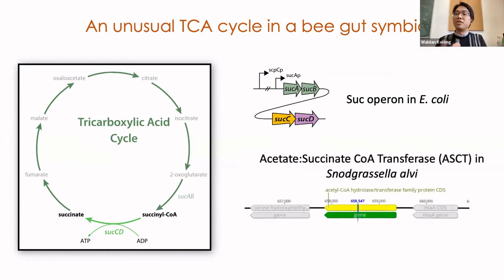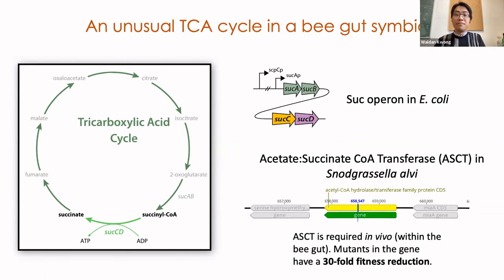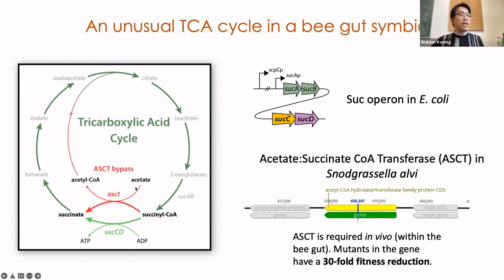Around this time, we were also conducting transposon insertion sequencing of Snodgrassella to determine the genes involved in gut colonization. We ended up identifying a candidate gene — a putative acetate succinate-CoA transferase, or ASCT — that was necessary for living in the bee gut. In fact, mutants in this gene had a 30-fold reduction in fitness in vivo. So this gene could potentially replace SucC by transferring CoA to acetate instead of producing ATP.